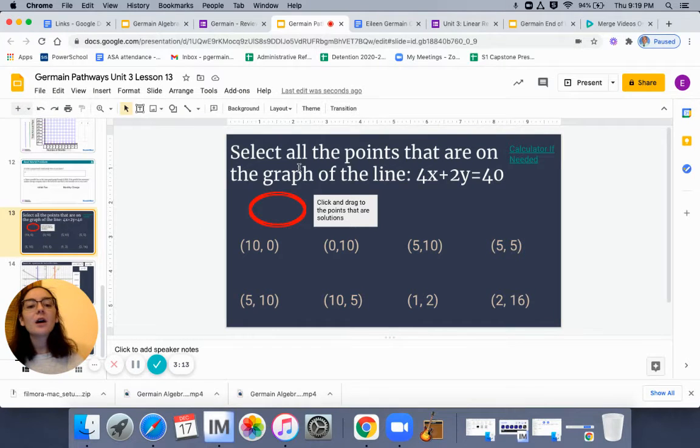Now you need to select all the points that are on the graph for the line 4x plus 2y equals 40. Oh my goodness, we did this in class today. You guys should have not too bad a deal with this. You're going to grab this circle and put them around all of the coordinate points that are a solution or fall on this line. Calculator is linked if you need it.